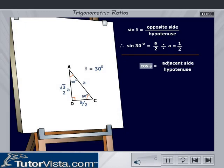Cos theta is given by the adjacent side by the hypotenuse. Therefore, cos 30° is equal to root 3 by 2 into A divided by A, that is equal to root 3 by 2.